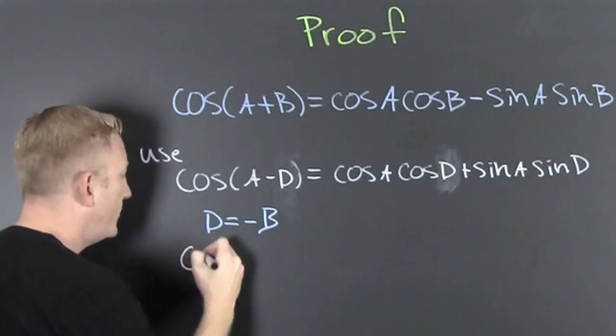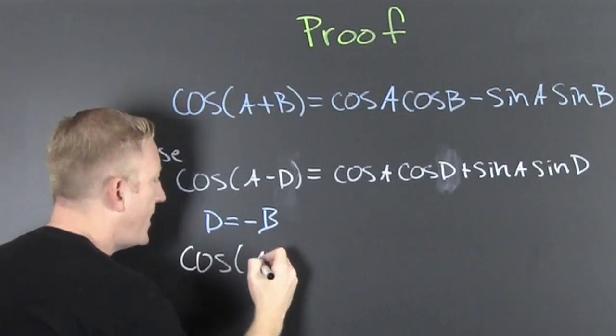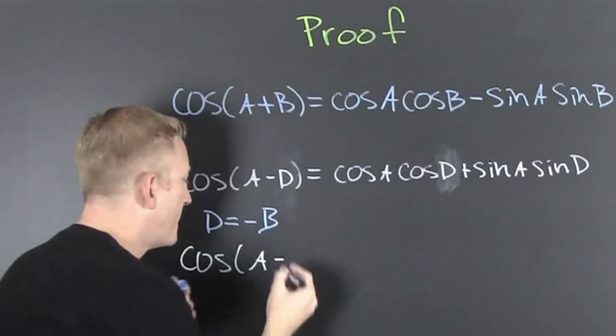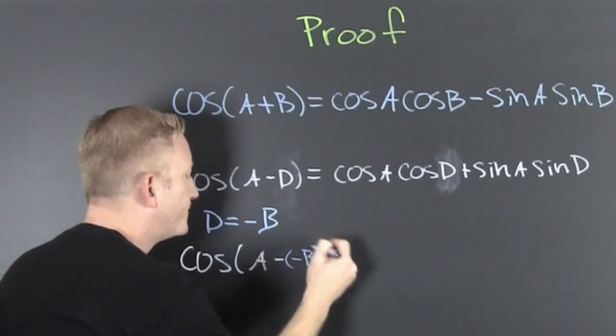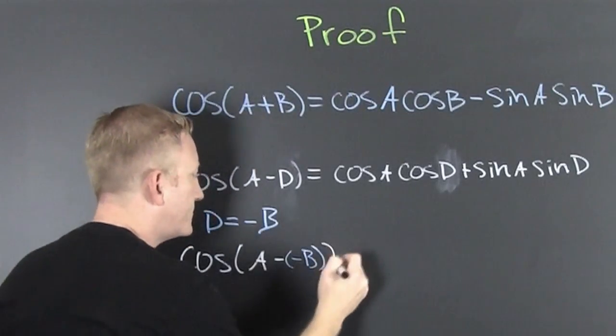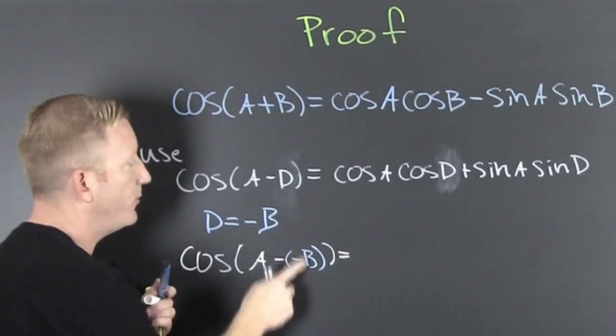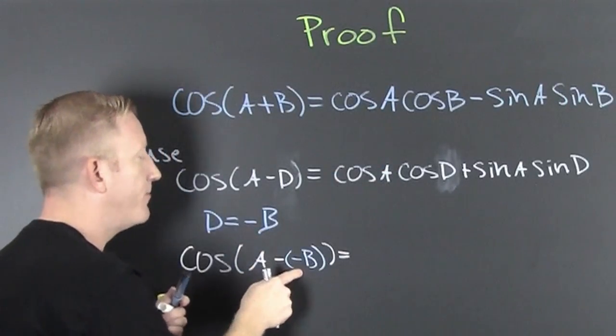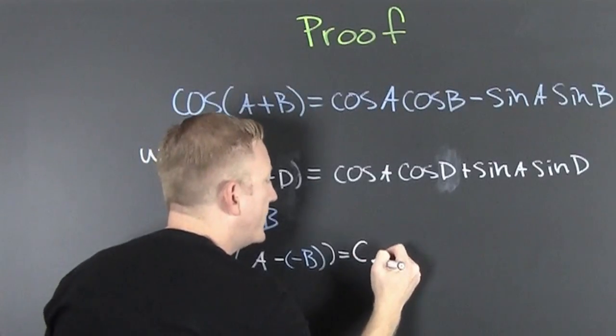So here we go. This is the cosine of A minus a minus B. That's going to be equal to. Now, if I saw a D over there, I'm now going to put a minus B. And you probably see where this is going.